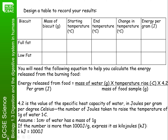We're now going to start filling in our results. For the low-fat biscuit, the mass was 4.01 grams. Our starting temperature was 18 and our end temperature was 57. For the full-fat biscuit, the mass was 4.05 — very similar. The starting temperature again was 18 because we used fresh water and a fresh boiling tube, and our end temperature for the full-fat was 65 degrees. The change in temperature for the full-fat was 47 degrees C, and for the low-fat it was 39.